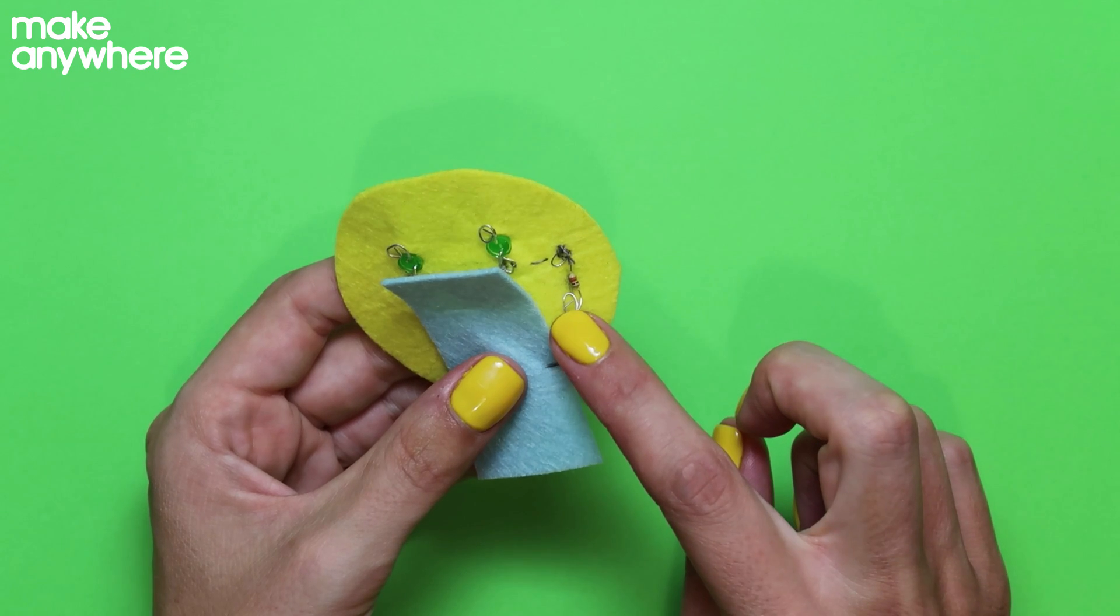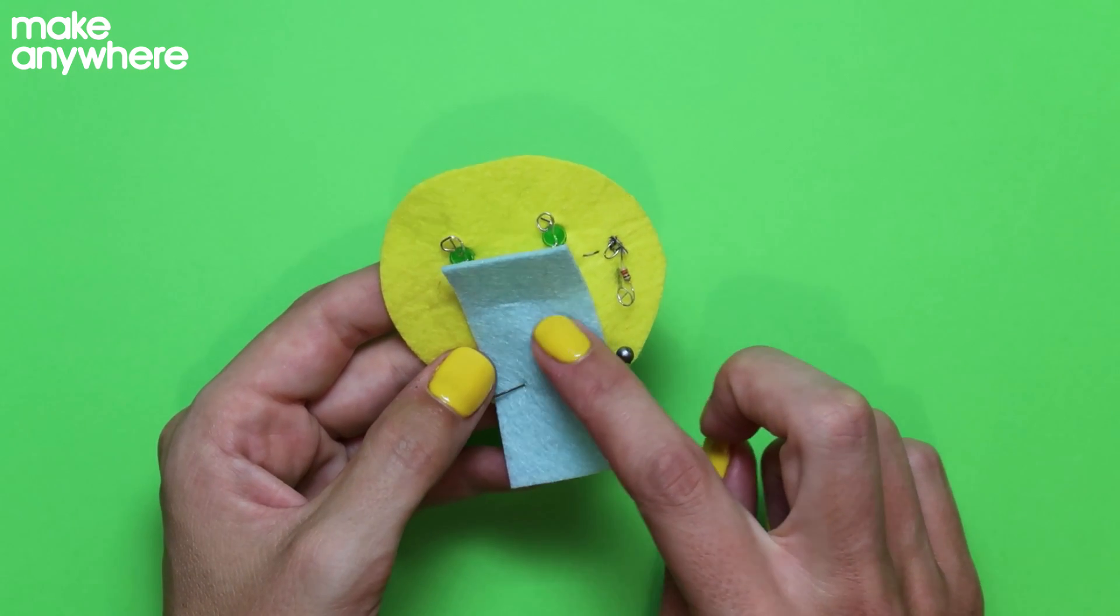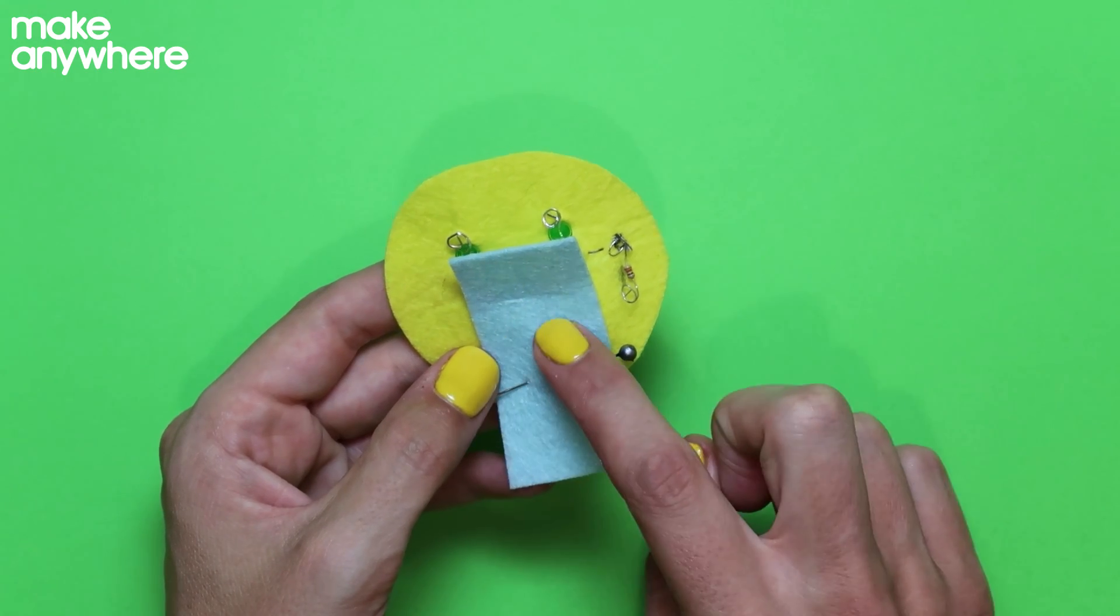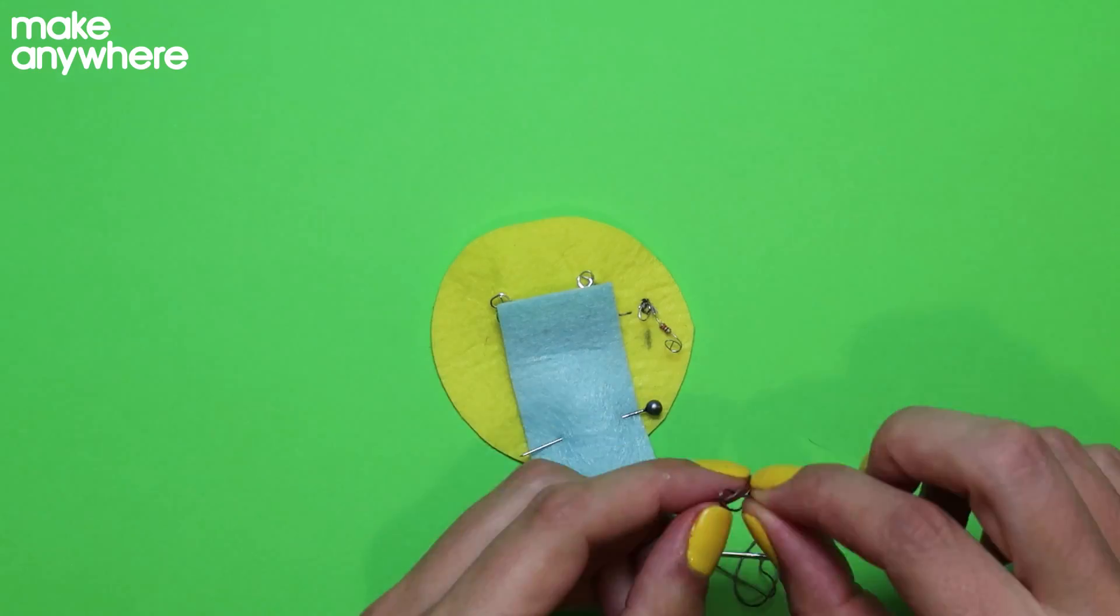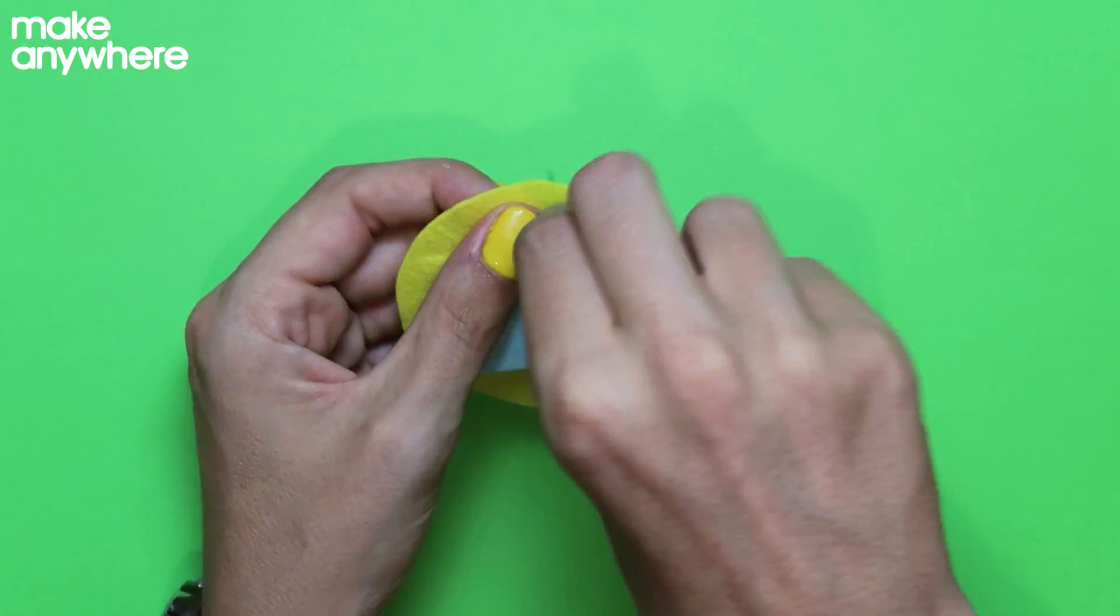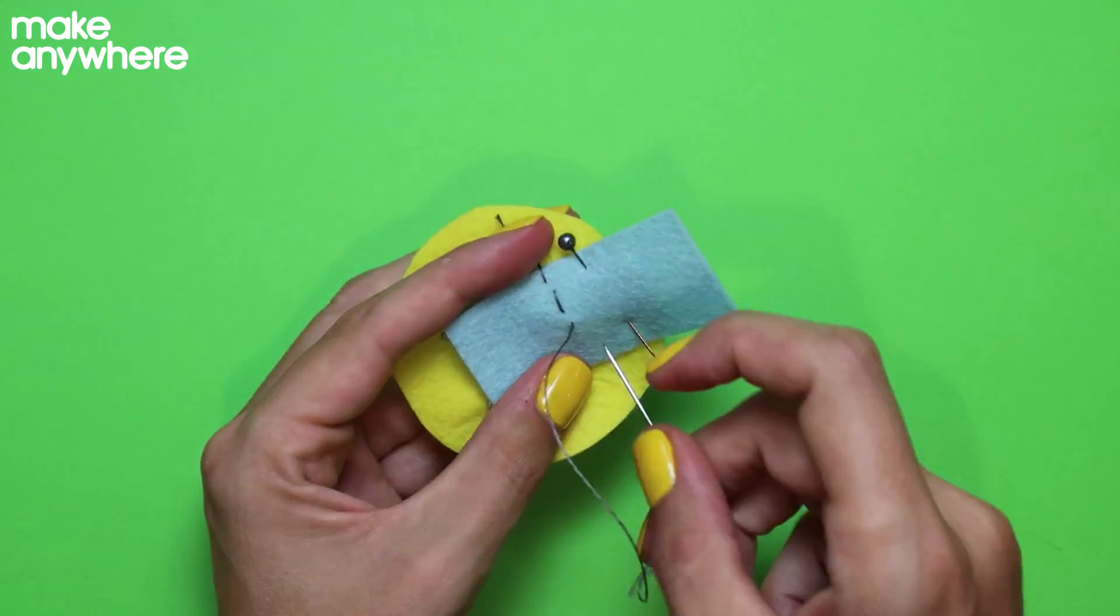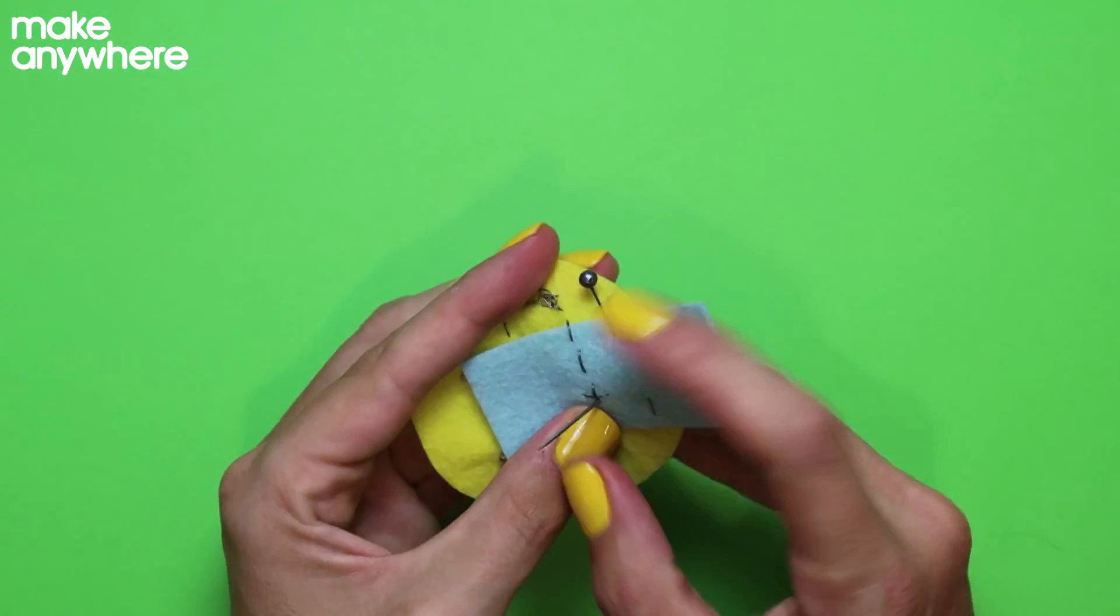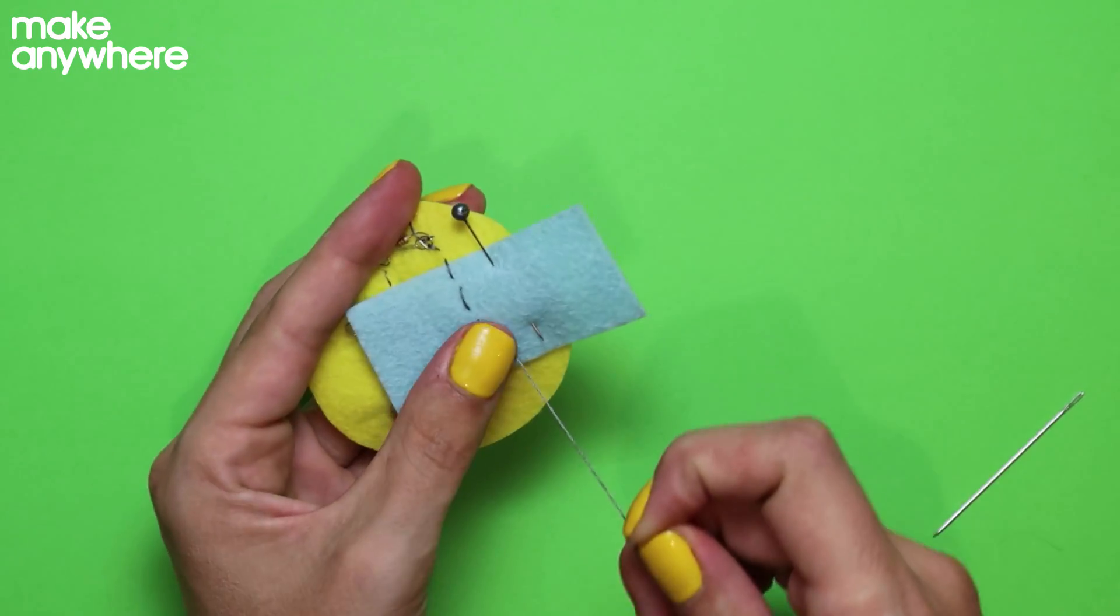Now we need to get some conductive thread and we need to stitch from there. Again, we go up, down and around three times. Then we're going to stitch, stitch, stitch, stitch to the middle of this part here and do a nice big cross. Then we're going to knot off again. And there we go.